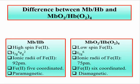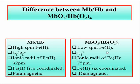Due to the high spin Fe2+ center in deoxymyoglobin or deoxyhemoglobin, the configuration of Fe2+ becomes T2G4 EG2. While in the case of oxymyoglobin and oxyhemoglobin, the low spin Fe2+ has the configuration of T2G6.